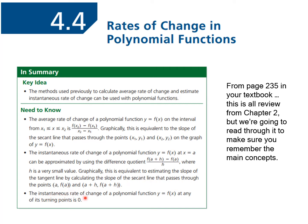The instantaneous rate of change of any polynomial function at its turning point is 0. So when we're at a turning point, the slope of the tangent line there is 0.